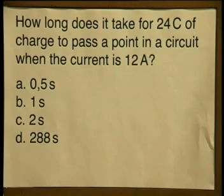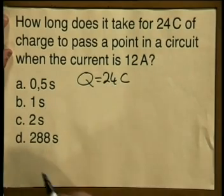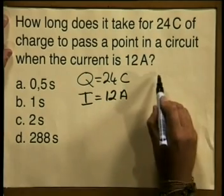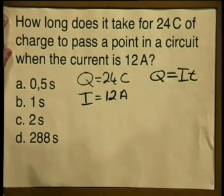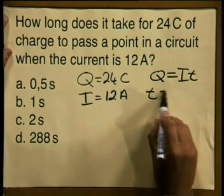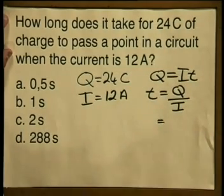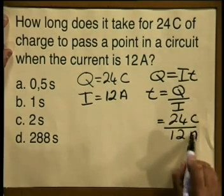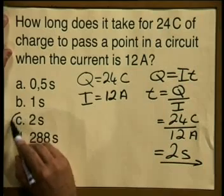Let's check your answer and see what you got. Again, I'll write down my information. Q, my charge, is equal to 24 coulombs. The current, I, is equal to 12 amperes. Writing down my equation, Q is equal to I times T. I will now make T the subject of the formula, so T is equal to Q, the charge, divided by I, the current. Substitute in 24 coulombs divided by 12 amperes gives us an answer of 2 seconds, which corresponds nicely with option C.